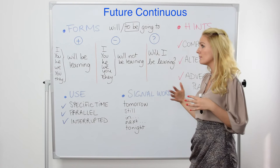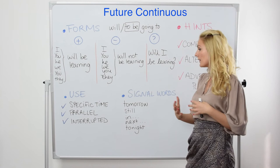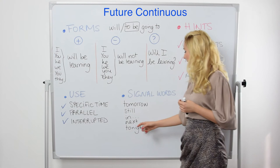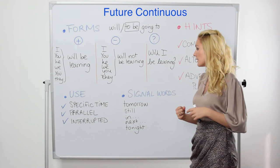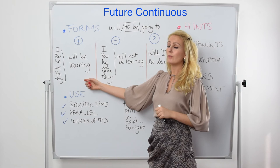When do I use this tense? Let's see some examples. I use this tense for an action that will take place at a specific time in the future — for example: 'I will be travelling next year.' For parallel or simultaneous actions: 'I will be reading, you will be studying.' Or an action that is interrupted: 'I will be learning when you get home.'